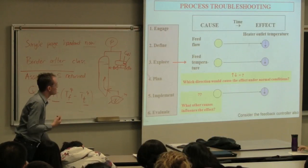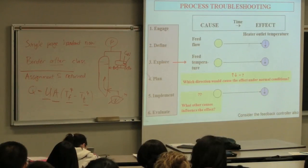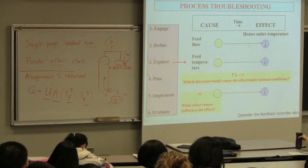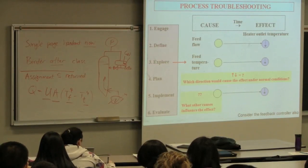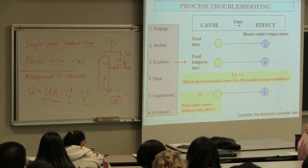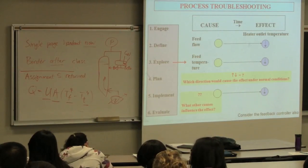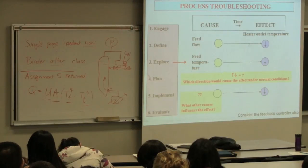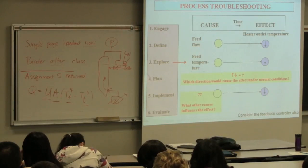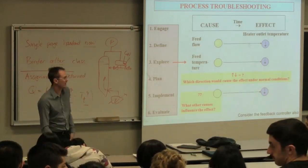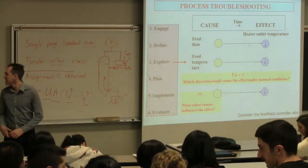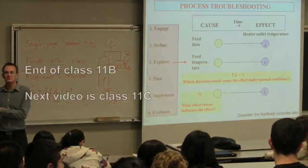I'll just wrap up with this and then I'll hand out the binders. What would cause the temperature to drop on the output? Would the feed flow going up or the feed flow going down cause the temperature to drop? Feed flow going up. Feed temperature going down. Feed flow going up. So those would be potential causes. What I'll do next class is we'll look at some of the other potential causes and we'll move on to the plan.